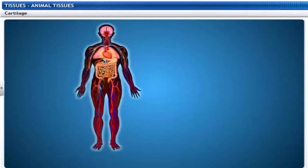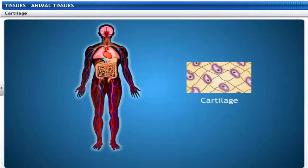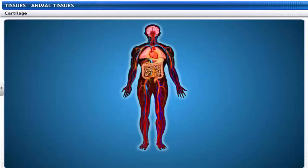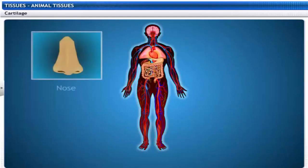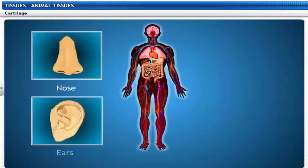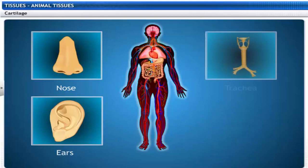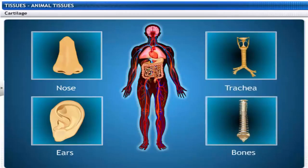Another type of connective tissue is cartilage. Cartilage has widely spaced cells suspended in a matrix of proteins and sugars. It is found in the nose, ears, rings of the trachea, and at the end of long bones to give flexibility.